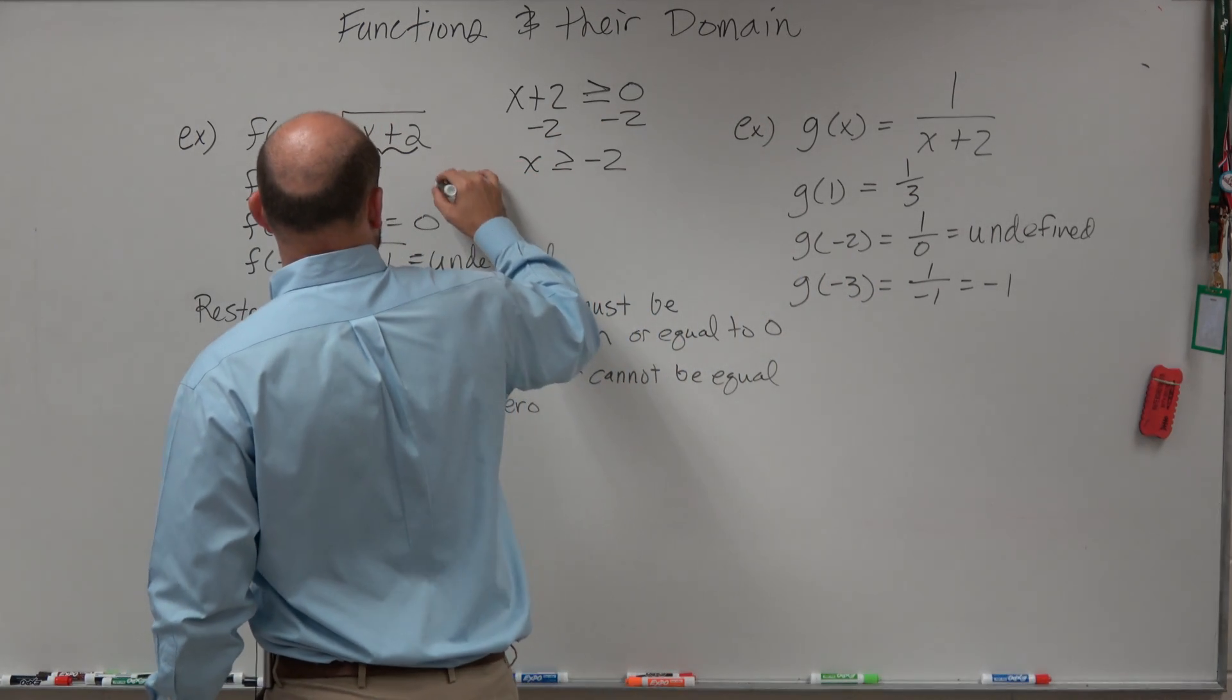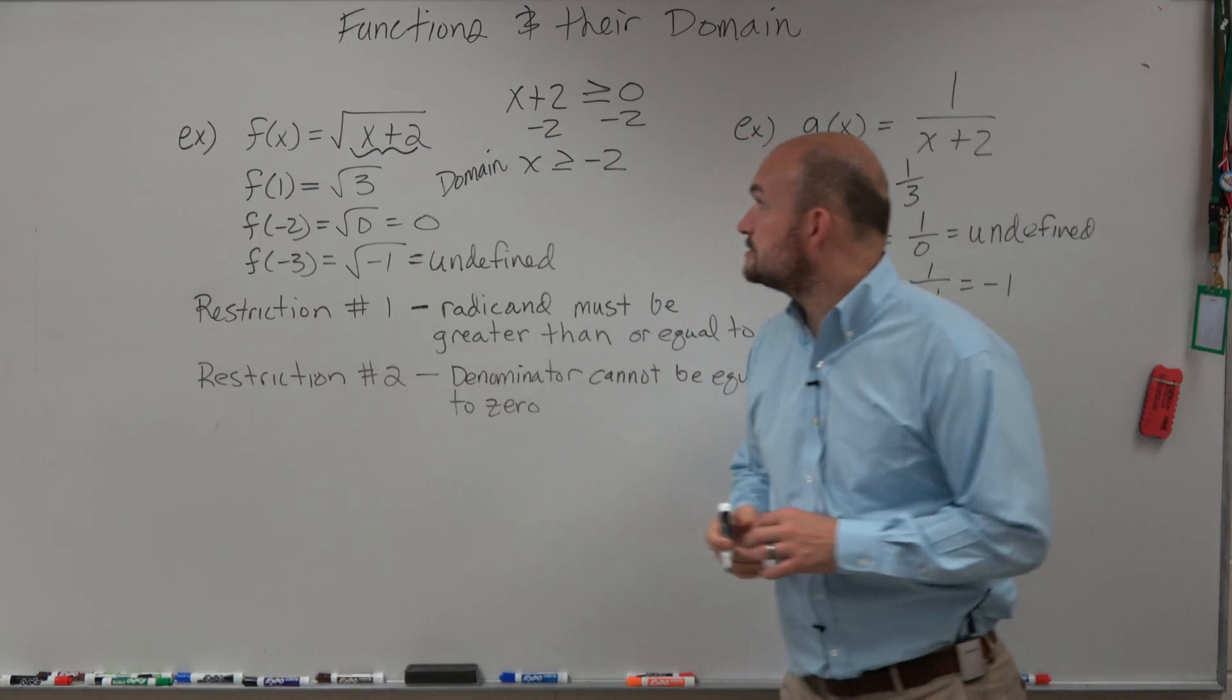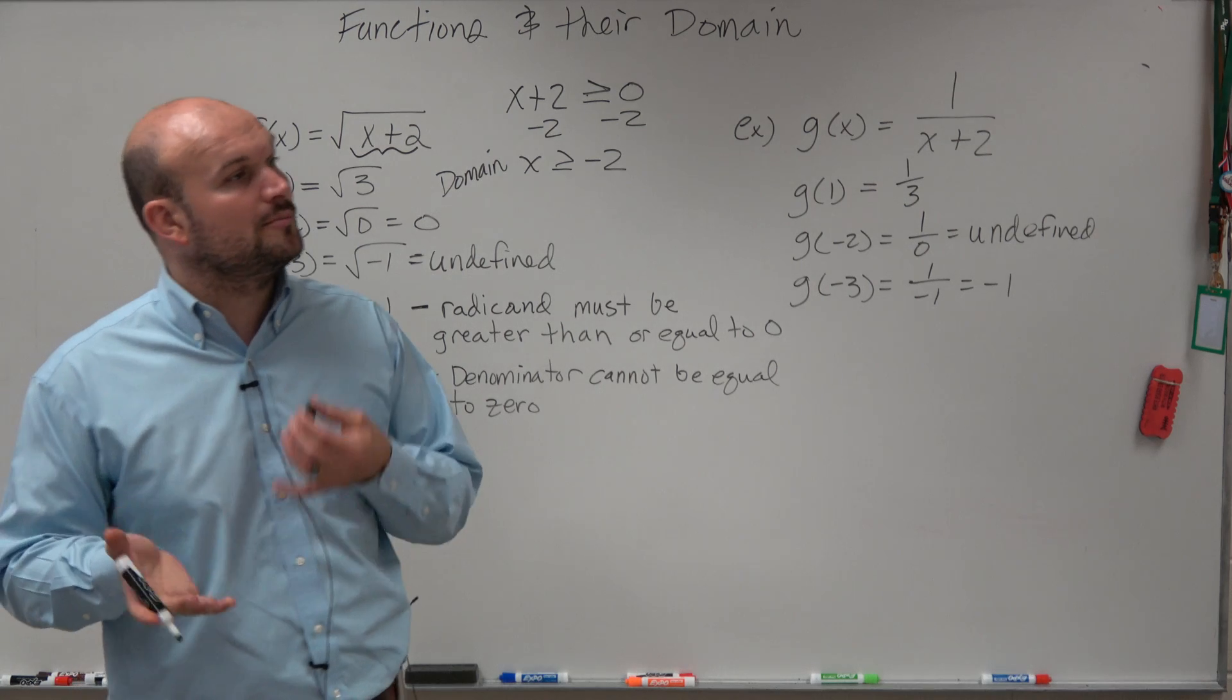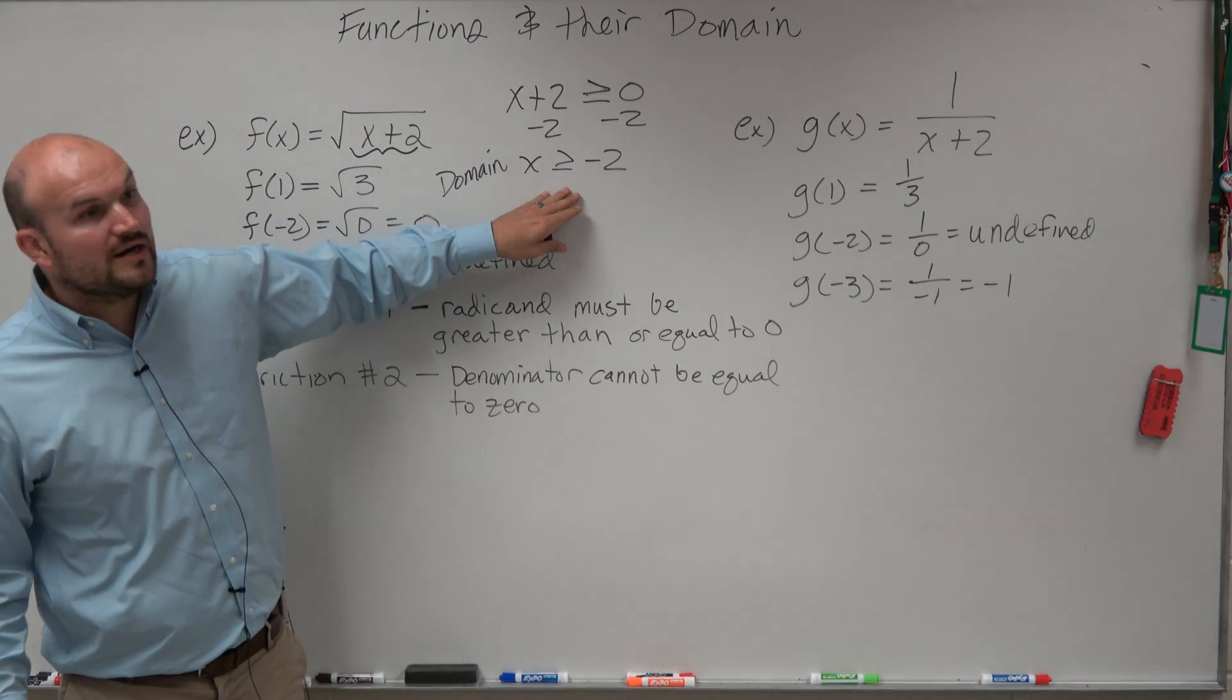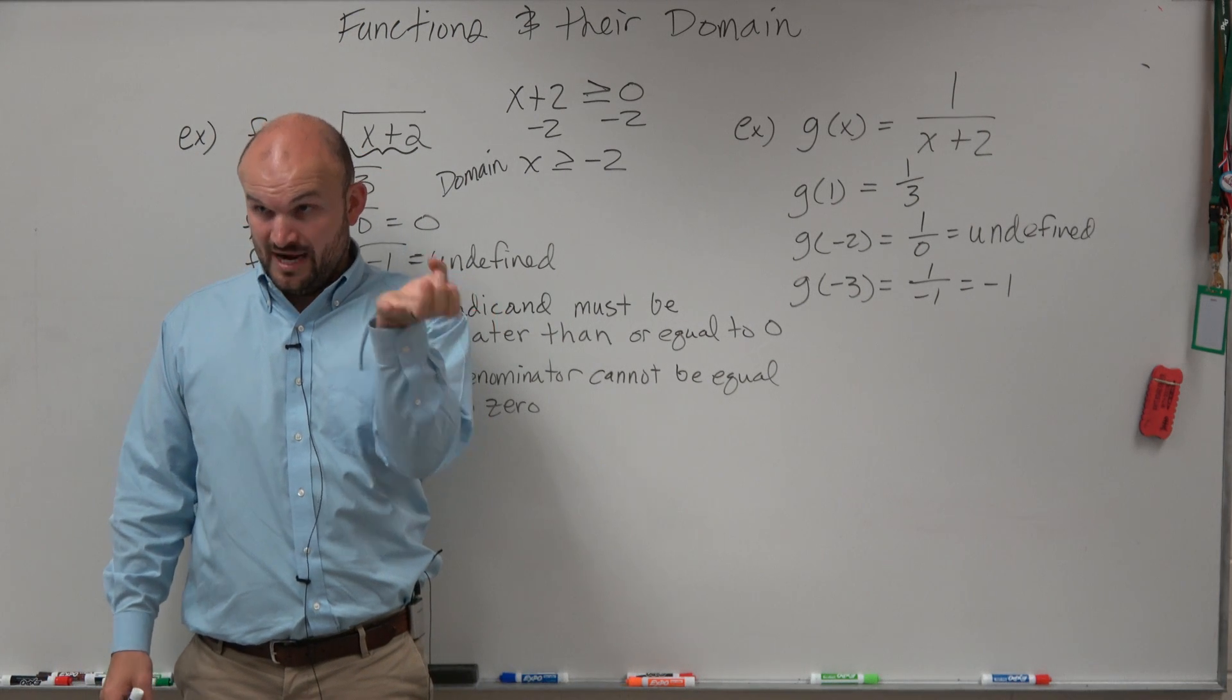That is your domain in interval notation. So by finding the domain, it's going to be x is greater than or equal to negative 2. Let's go ahead and write in the other one because we're going to go back and forth. So x is greater than or equal to negative 2, so that means negative 2 is the smallest value, right? Would you guys agree with me?